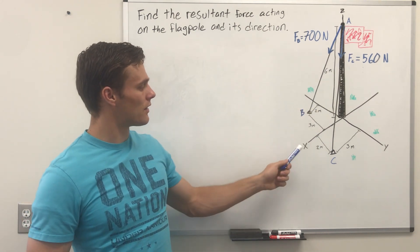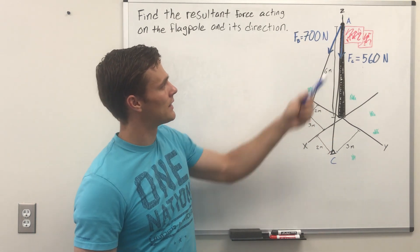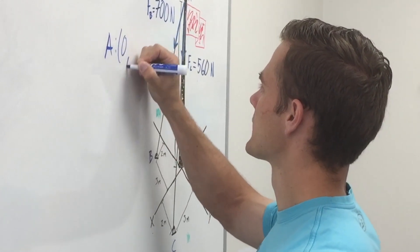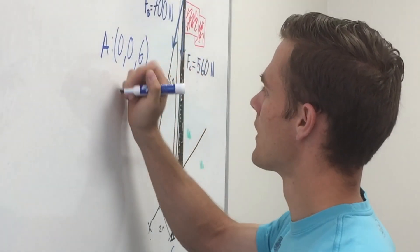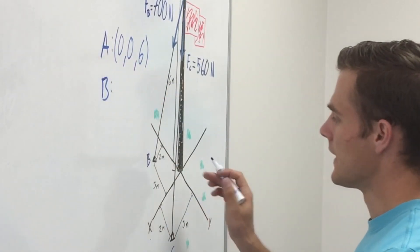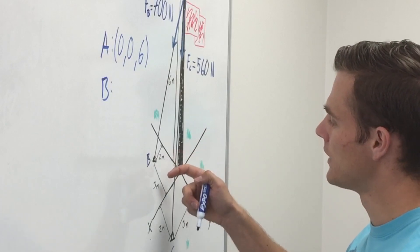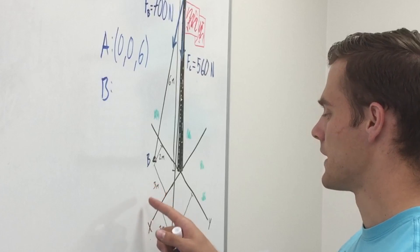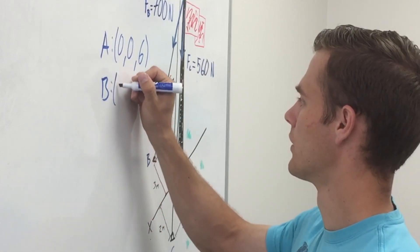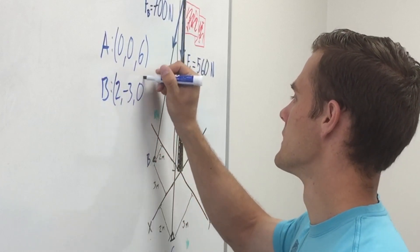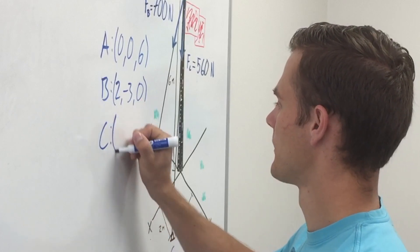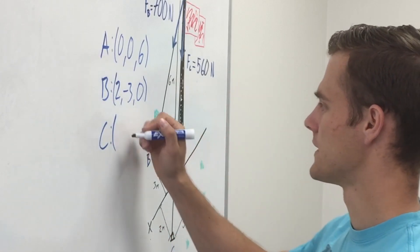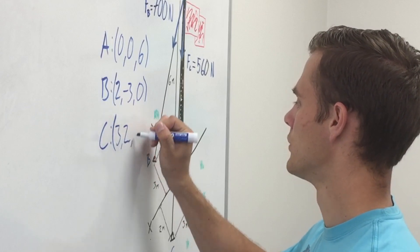To start, we need to represent each of these points as points on our coordinate system. Point A is not going at all in the x and y directions, but it is 6 meters up in the z direction, so point A is (0, 0, 6). Point B is not going at all in the z direction, but it is 2 meters in the x direction and negative 3 in the y direction, so point B is (2, -3, 0). Point C is similar except that it is going 3 in the x direction, 2 in the y direction, and 0 in the z direction, so point C is (3, 2, 0).